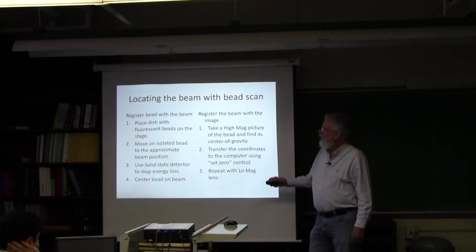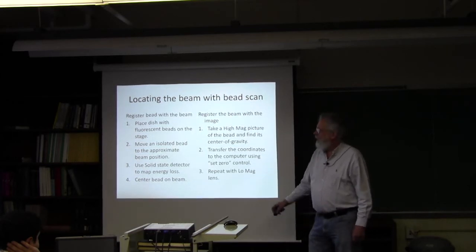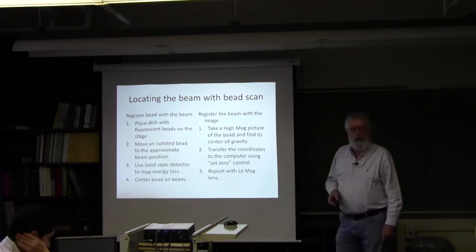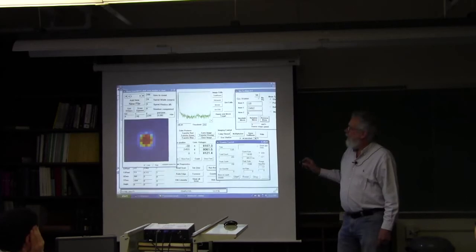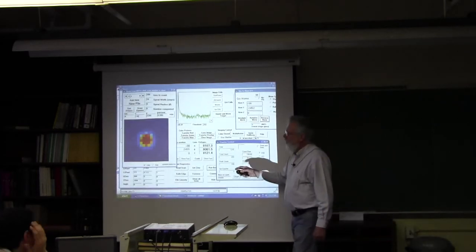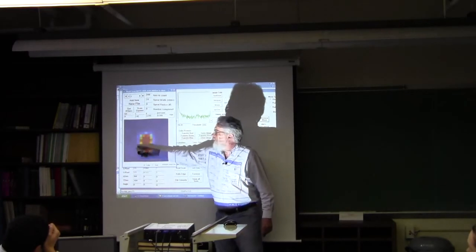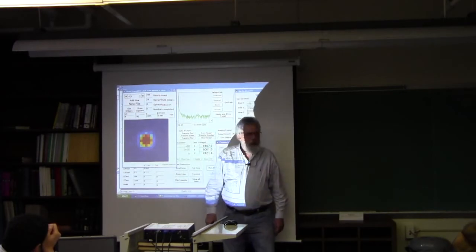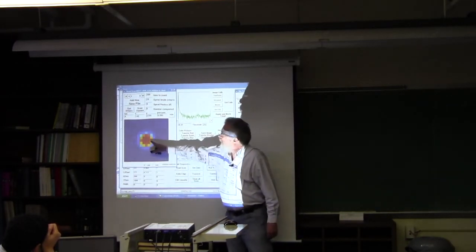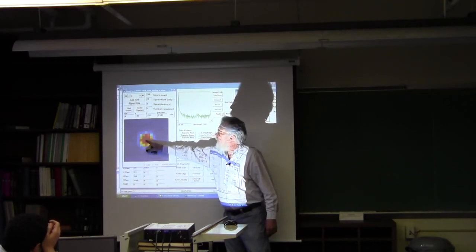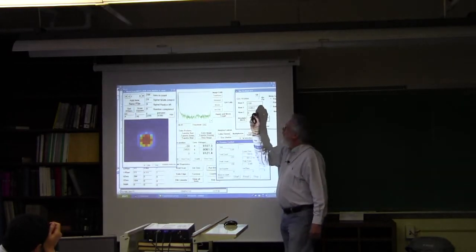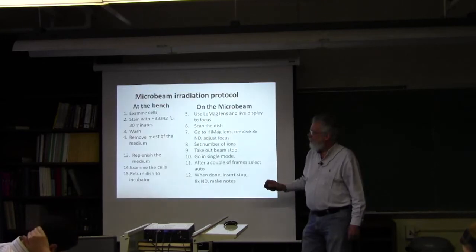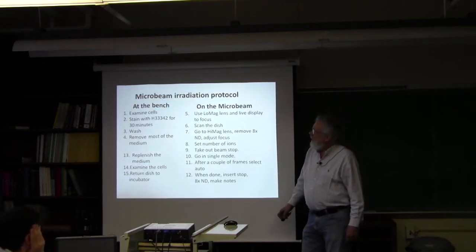These are the steps going through the bead scan. This is in gory detail. I think you have a slightly different version in your books. We'll go through this as an exercise tomorrow. What you get is a picture like this where the dark blue areas are where the particles are missing the bead and the red areas are where the particles are going through the bead. Either the program locates it or you can click on the center of this, and that tells you where you have to move to actually center the bead on the beam axis.